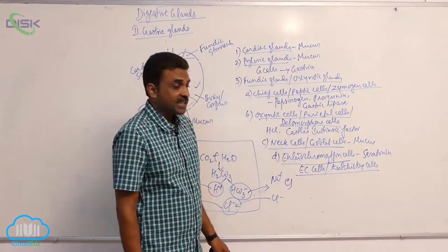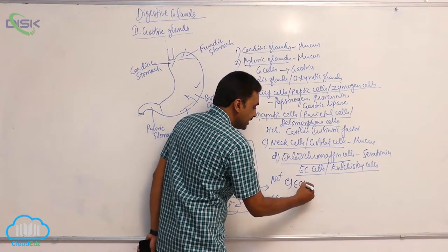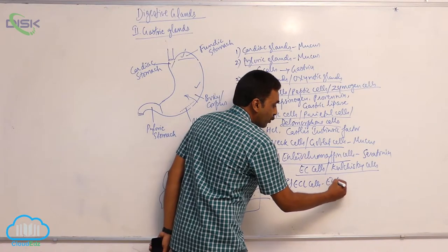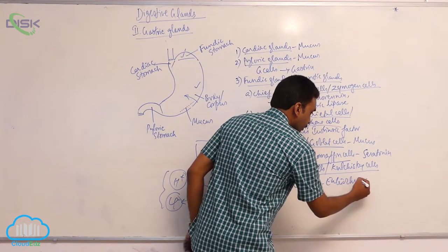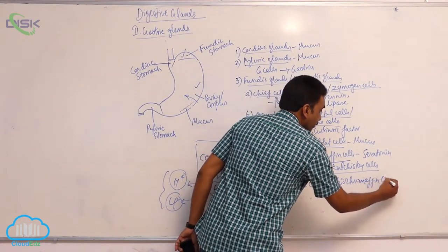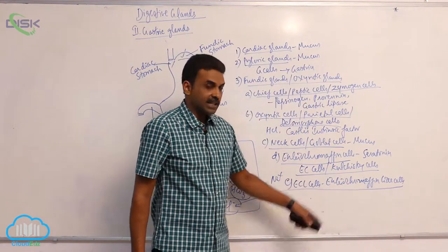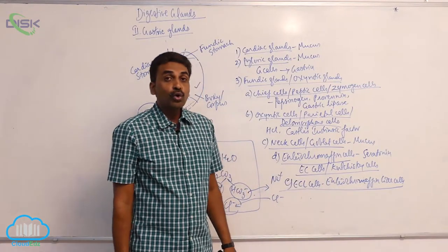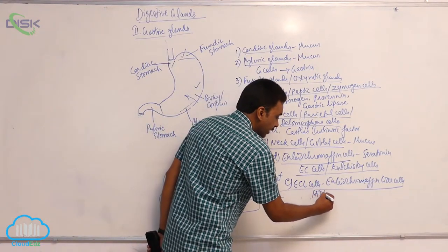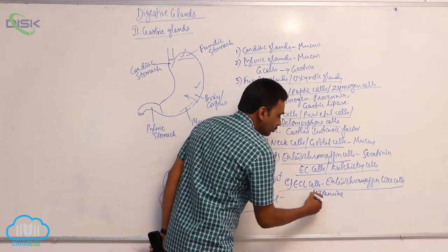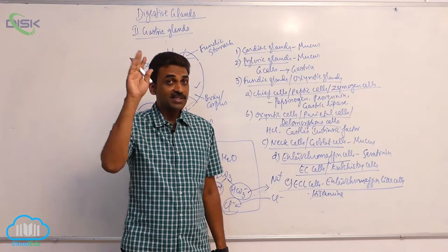Lastly, there is another type of cell inside the fundic glands called ECL cells, also called enterochromaffin-like cells. These cells produce histamine.